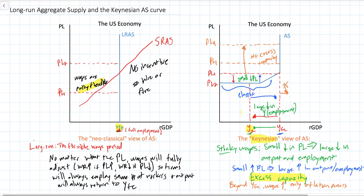However, beyond full employment, further increases in output are impossible because wages will adjust upwards if a country tries to produce beyond its full employment level for a sustained period of time. Therefore, the Keynesian aggregate supply curve is vertical at full employment. It's horizontal below full employment — that section here — because of excess capacity. The neoclassical curve is vertical beyond full employment, making increases in output beyond YFE impossible, and horizontal below full employment because of excess capacity.